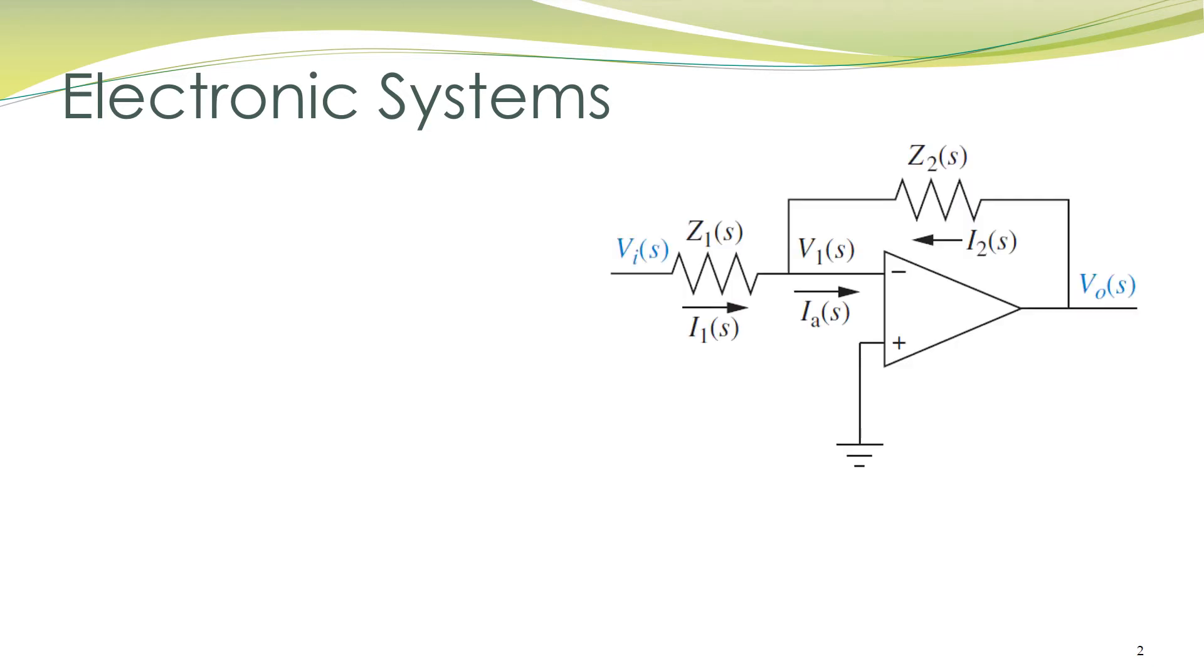Let's take a simple example of an electronic system shown in the figure. We want to obtain a transfer function between the output voltage V₀ and the input voltage Vᵢ. You remember that an ideal operational amplifier has infinite input impedance and infinite gain, which implies that voltage at both the inverting input and non-inverting input is the same.